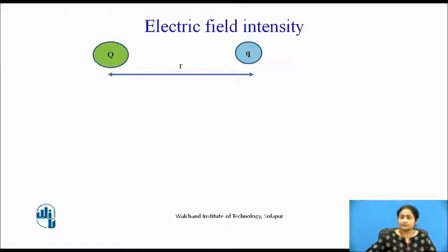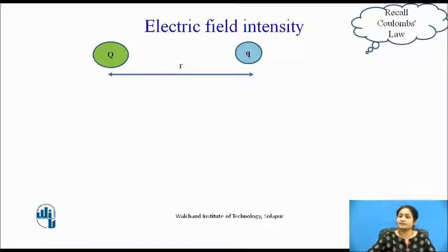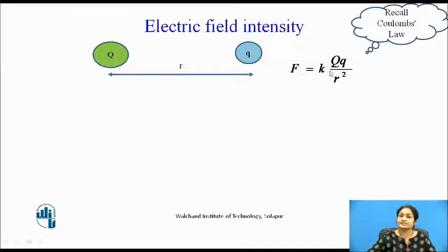Now, suppose we assume this as a positive charge capital Q and this is a negative charge. The force between these two charges is recalled by Coulomb's law. The force acting between these two charges is given by K into Q — that is the product of capital Q into small q, divided by R square. Force is directly proportional to the product of the two charges and inversely proportional to the square of the distance, and K is the proportionality constant.